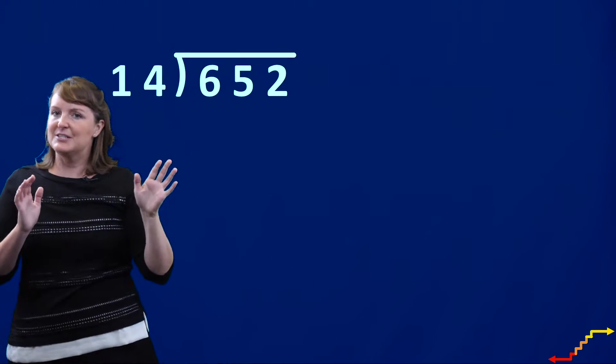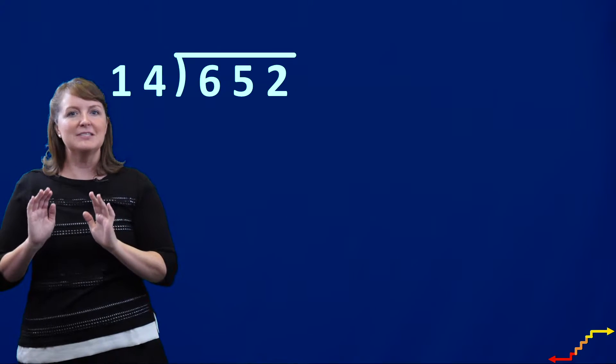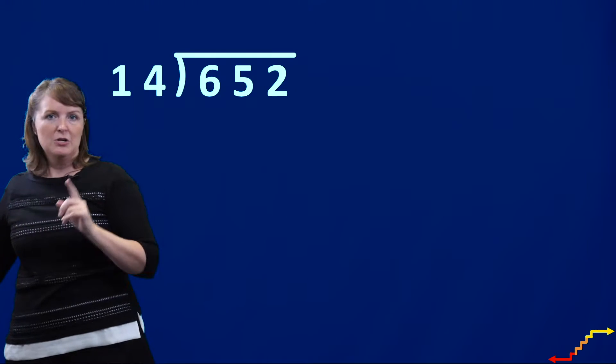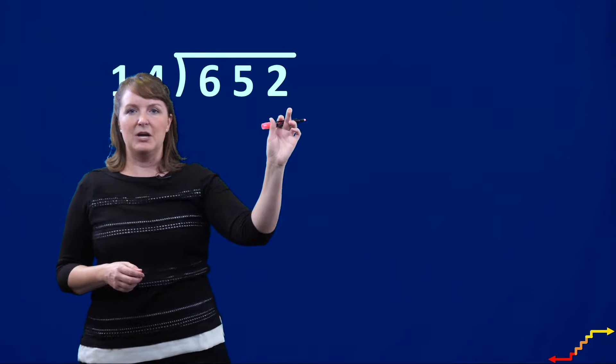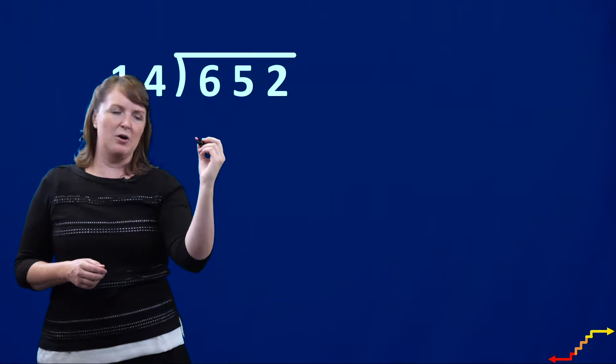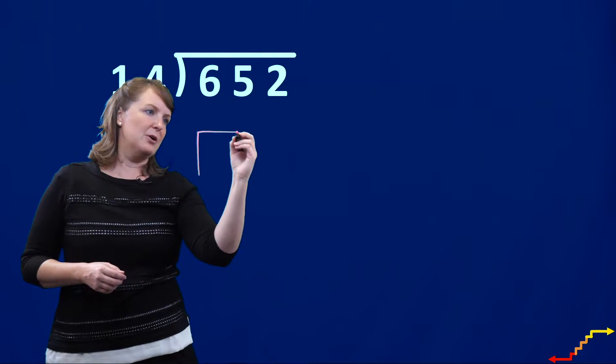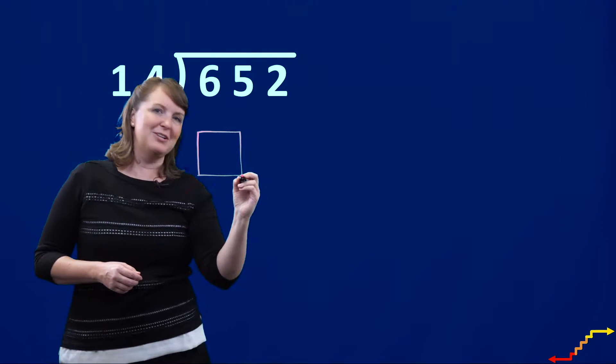Now, I said we're doing lattice division, and that's just a little bit of a different setup than lattice multiplication. So let me show you what this setup looks like. I have a three digit number here, so that means I'm going to draw three squares.